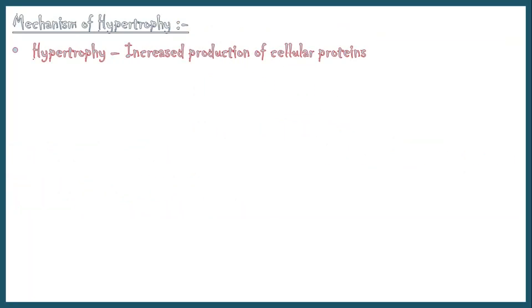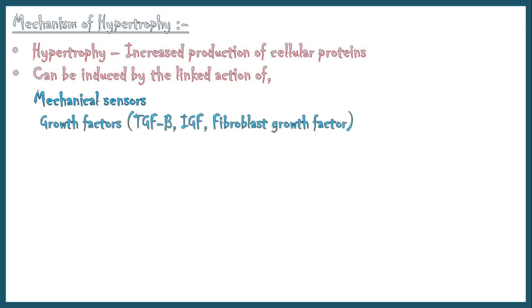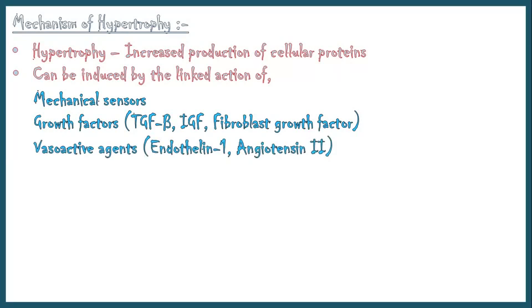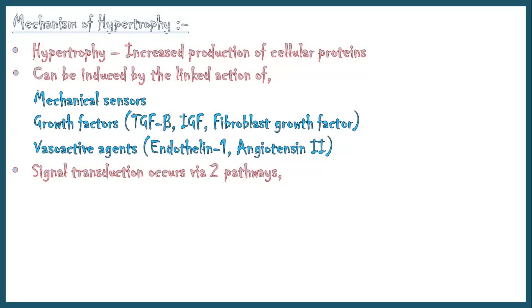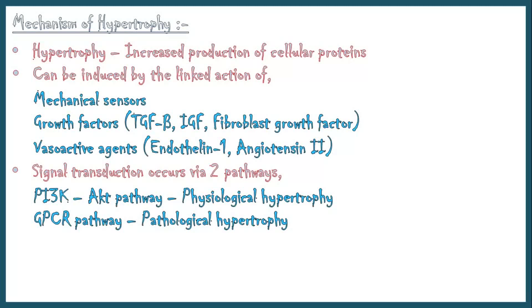A cell undergoes hypertrophy due to the increased production of cellular proteins. Hypertrophy can be induced by the linked actions of mechanical sensors activated by increased workload, growth factors including transforming growth factor beta, insulin-like growth factor, and fibroblast growth factor, and vasoactive agents like endothelin-1 and angiotensin-2. These factors activate two major signal transduction pathways: the phosphoinositol-3-kinase-AKT pathway, more prominent in physiological hypertrophy, and the G-protein-coupled receptor pathway, more prominent in pathological hypertrophy.